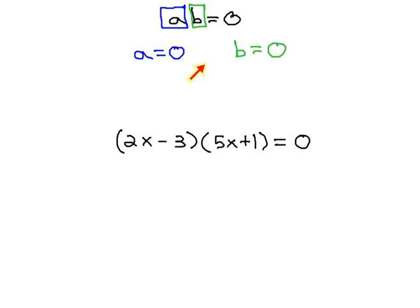What makes the zero product rule work is that there's only two ways to multiply to the 0, either the first factor is 0 or the second factor is 0. This means any time we have factors, such as this example, 2x minus 3 times 5x plus 1, we can use those factors to find out what x is.